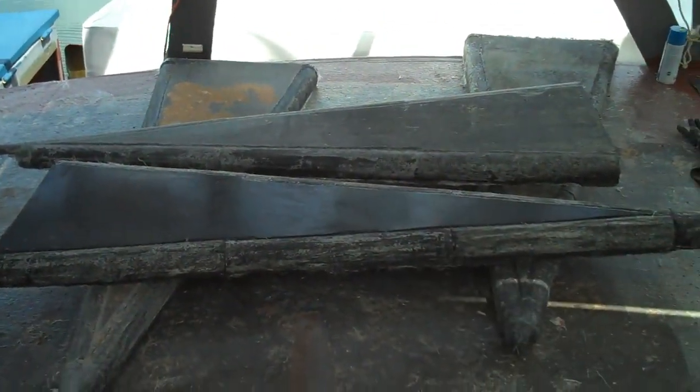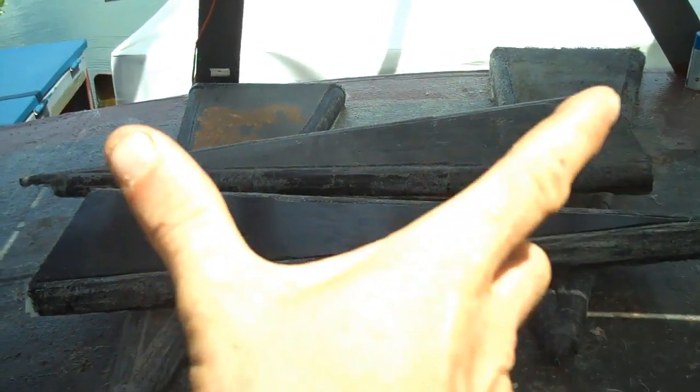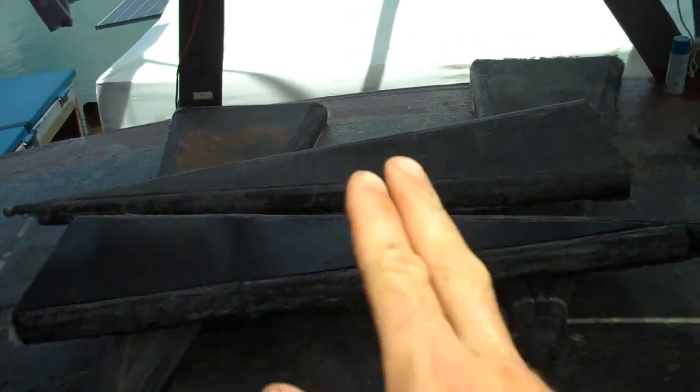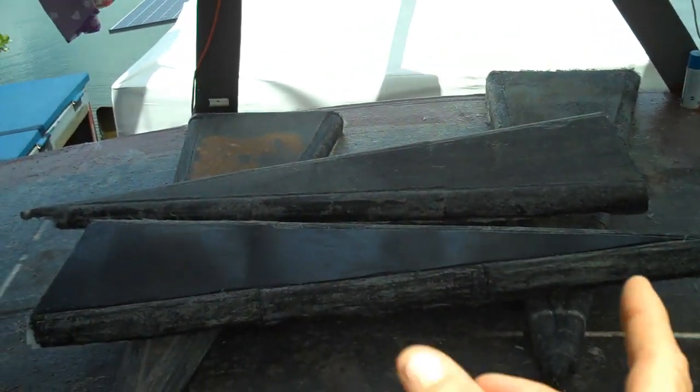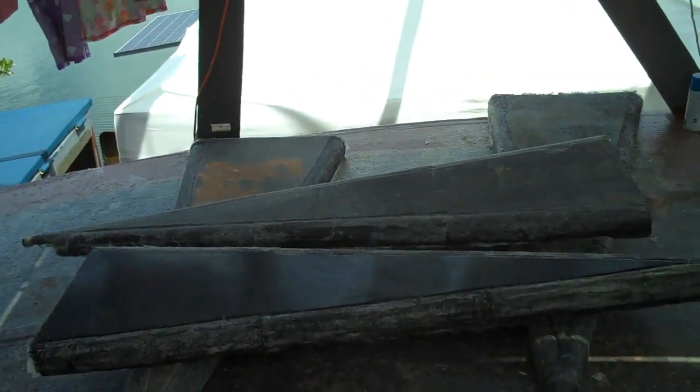Alright, I got my four pontoon tops for the front and the backs. Each one of these is five and a half feet long and they're going on a 29 foot long pontoon. That means I have 18 feet left of space to cover on the tops.